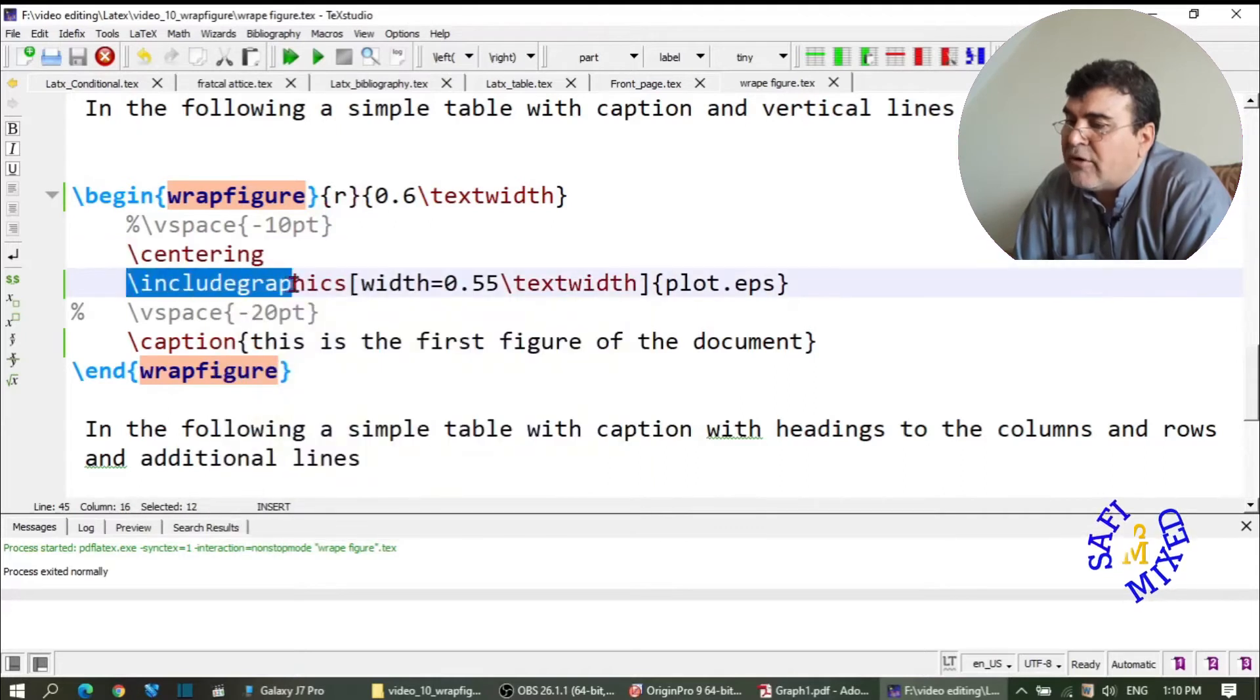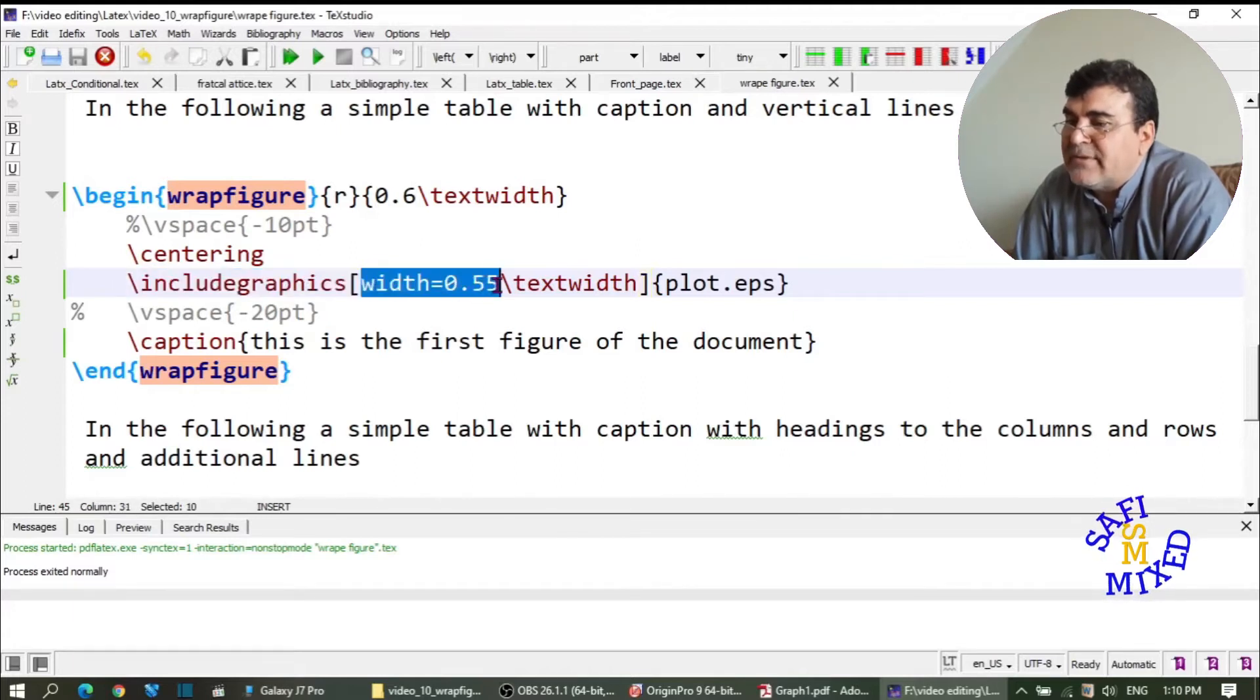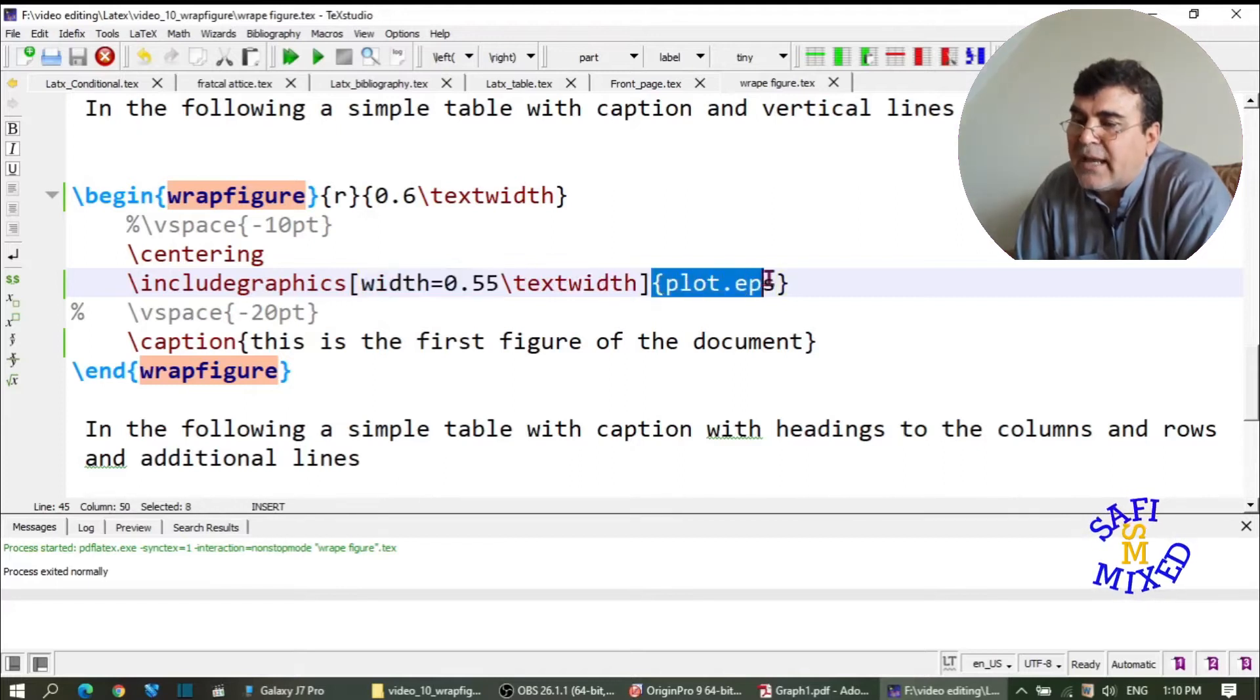and includegraphics would obviously incorporate the figure through the graphics package. Then this is the size of the figure, and again I'm keeping the text width, and this is the name of the plot. So here is the caption - you can add the caption to your figure